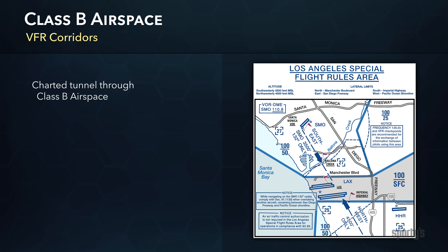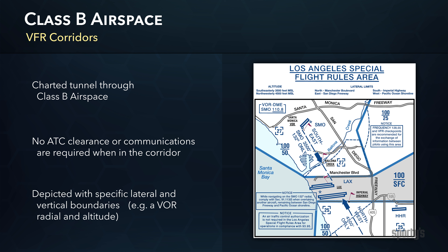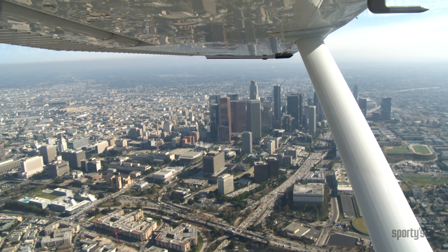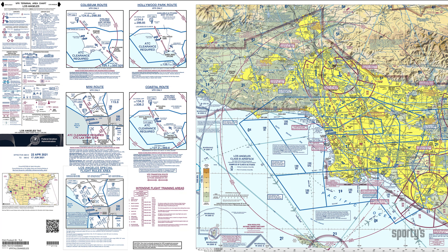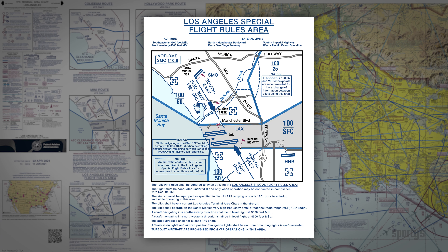VFR corridors are like a tunnel through Class B airspace. An aircraft can operate in these corridors without a clearance from or communication with ATC. They are similar to VFR flyways, except that they have specific vertical and lateral boundaries which must be followed by all participating aircraft. Because of the high volume of traffic in Class B, it is necessary to fly these corridors with extreme caution. An example of this can be found in the Los Angeles Class B airspace; refer to the Special Flight Rules Area section of the Terminal Area Chart for specific operating rules.